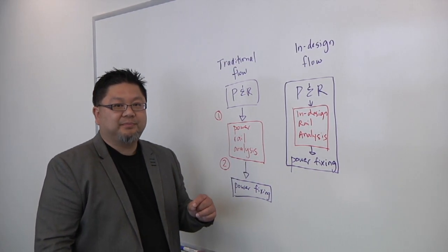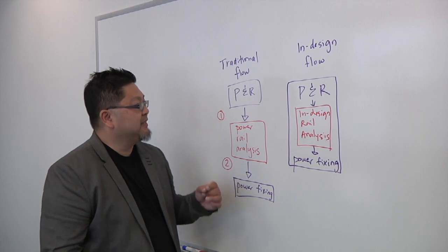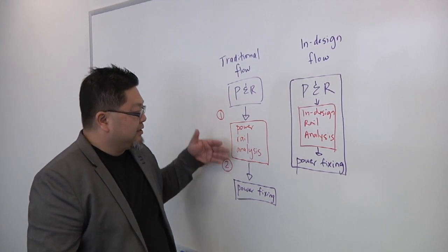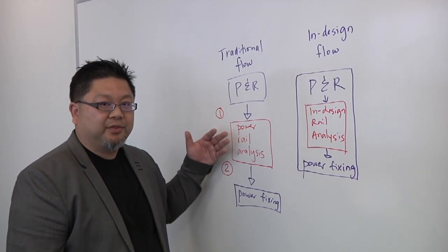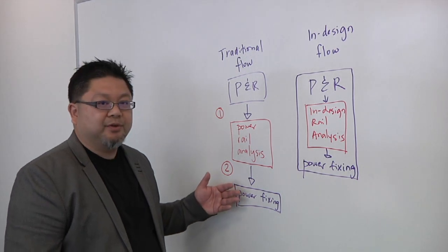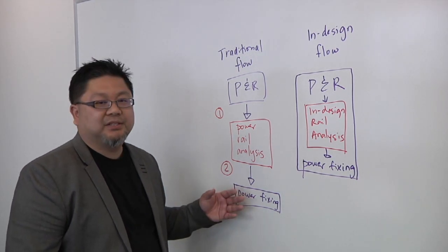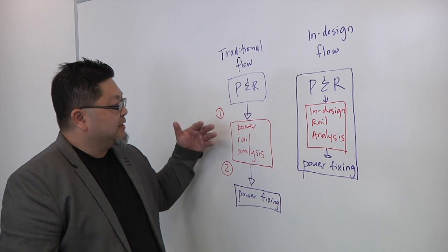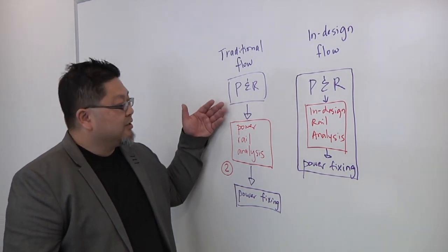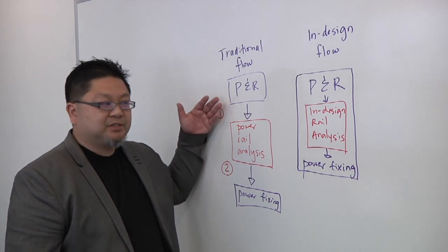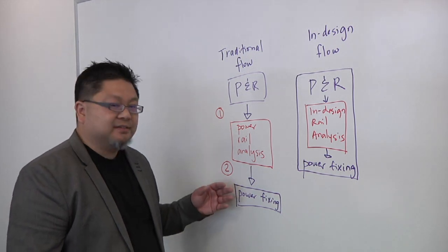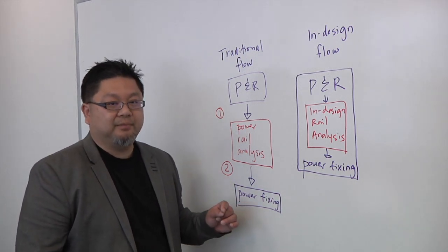In the traditional flow, when you're doing in-design rail analysis with your power sign-off tool, you typically go through your place and route, and then you have output that goes into the rail analysis tool, whether it's third party or the same vendor, and then you're going into your power sign-off tool, and it goes back into the place and route.